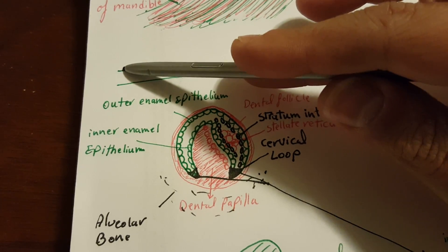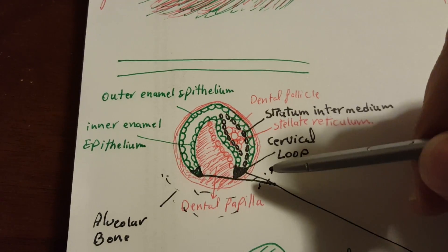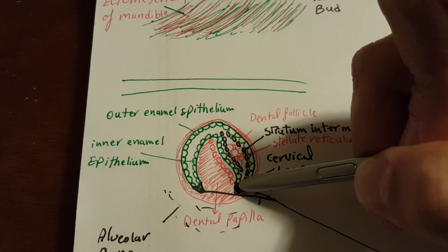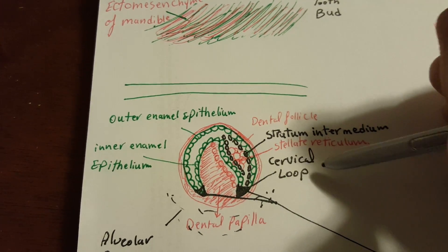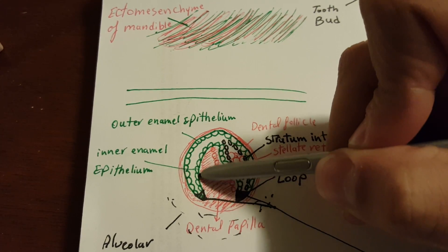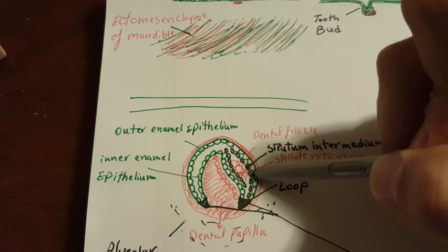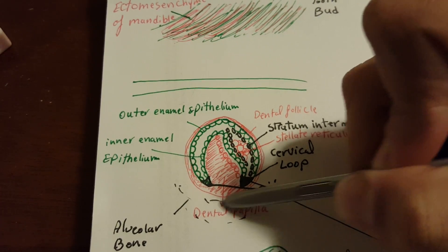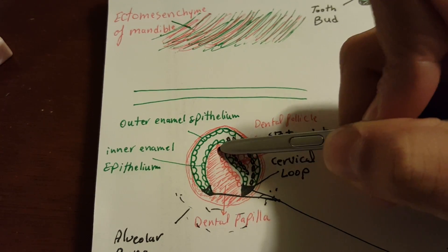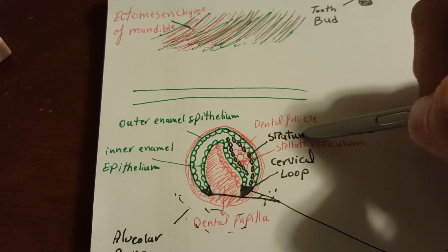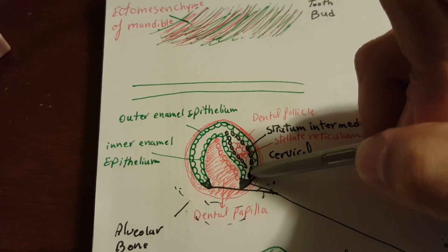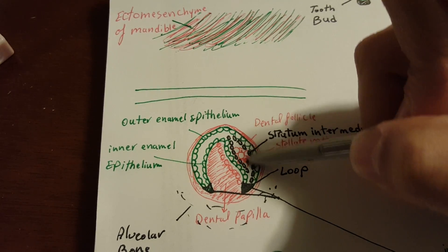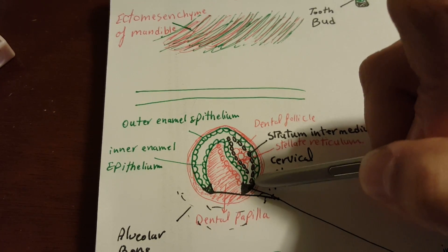Next is the differentiation of the enamel organ, which is very important — this is called the bell stage. The enamel organ differentiates into the inner enamel epithelium on the inside and the outer enamel epithelium on the outside, still surrounded by the dental follicle and the dental papilla. The layer close to the inner enamel epithelium is called the stratum intermedium, and between them is called the stellate reticulum.